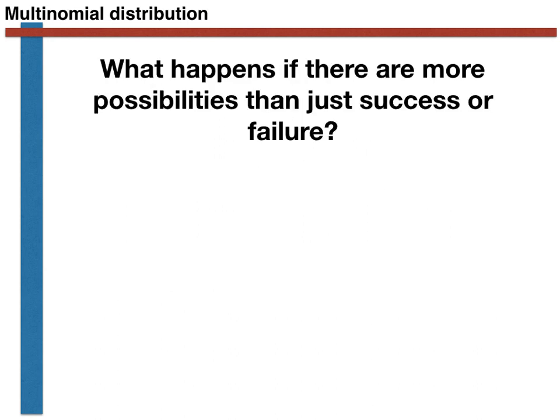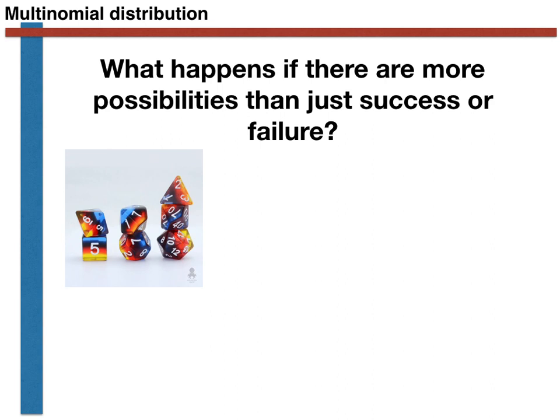In this video, we are going to extend this idea of a Bernoulli trial by asking what happens if there are more than two outcomes in each of the trials that we perform. For instance, if we roll two dice, we know that there are 11 possible outcomes, the numbers from 2 up to 12. What we would like is an expression for the probability of getting exactly k 7s if we roll two dice n times. Before we get onto that idea, let's first briefly review how trials with more than two possible outcomes work.